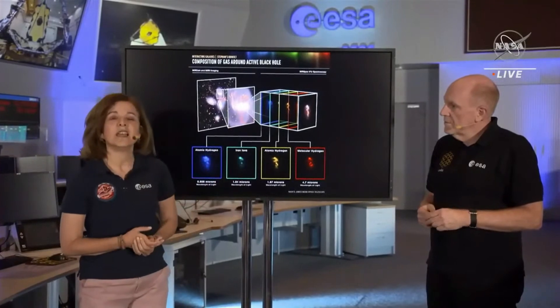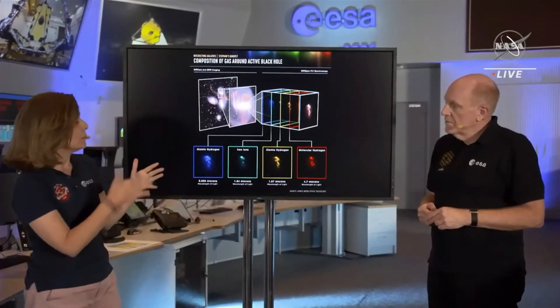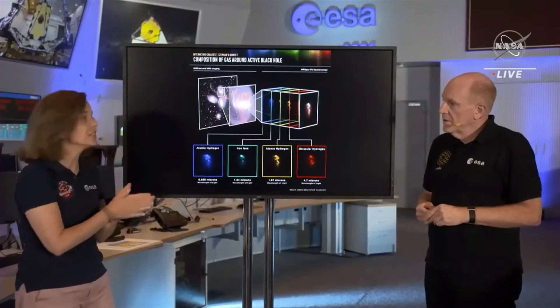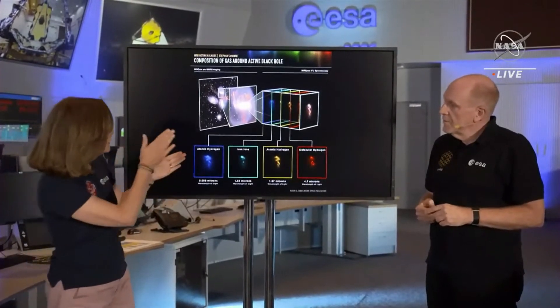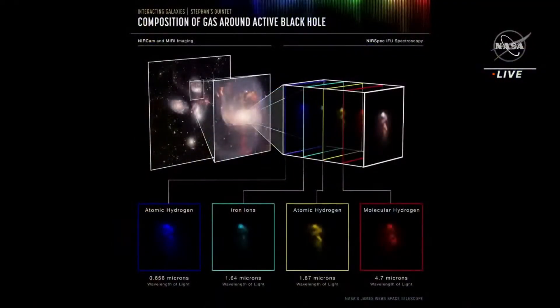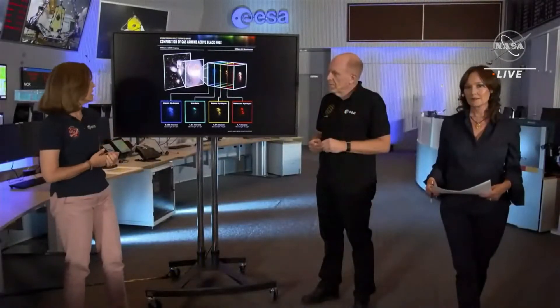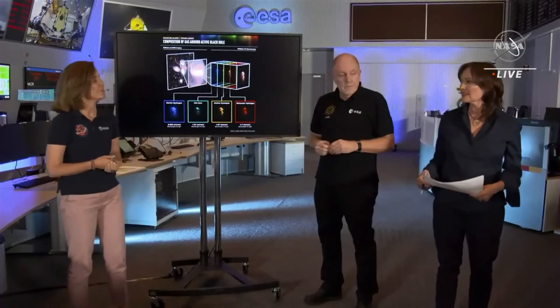With NIRSpec we can zoom into this area. We have technology that allows us to take thousands of images at different wavelength channels, so we can see the distribution of the gas — what's going on in the gas in different regions of this core area — and understand the composition of the gas, its velocities, and temperature. That's very important to understand the physics, and it shows the power of this telescope.